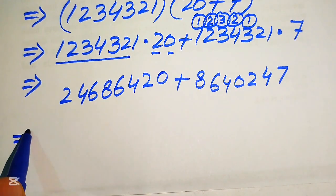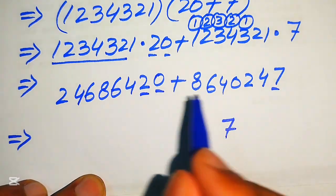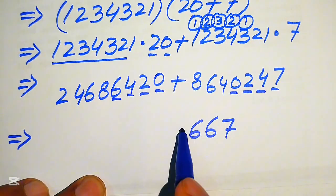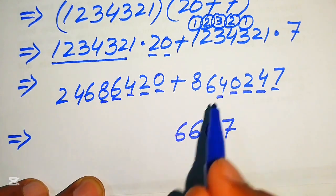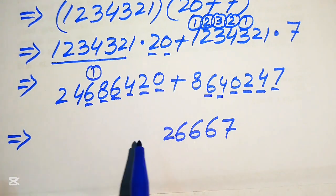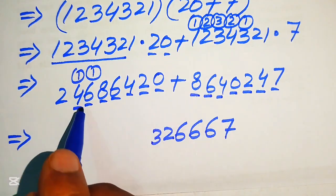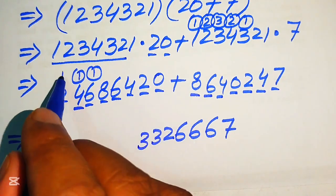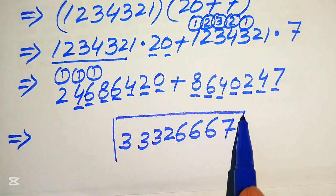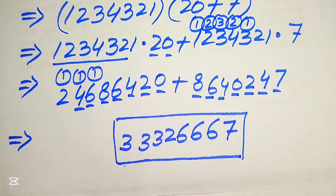Now in the last step we add the two values. 0 plus 7 is 7; 2 plus 4 is 6; 4 plus 2 is 6; 6 plus 0 is 6; 8 plus 4 is 12, write 2 carry 1; 6 plus 6 is 12 plus 1 is 13, write 3 carry 1; 2 plus 1 is 3. So we get our final answer. Thank you so much for watching this video — please subscribe to my channel for more exciting videos.